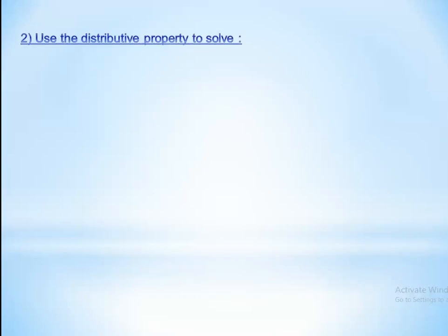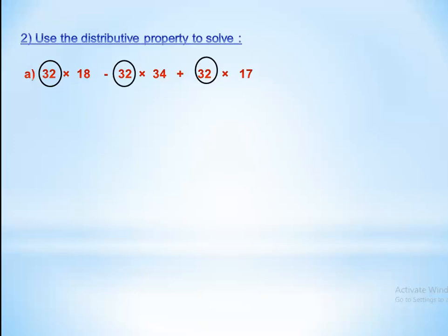Use the distributive property to solve: 32 by 18 minus 32 by 34 plus 32 by 17. Here 32 is the common number, so we take 32 out and write 32 by (18 minus 34 plus 17). The result inside the brackets is 1, so the answer is 32 by 1 equals 32.